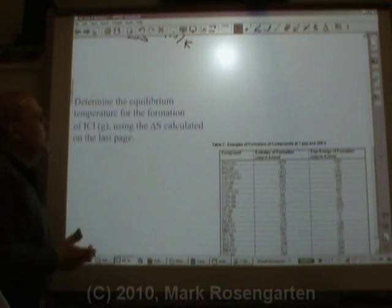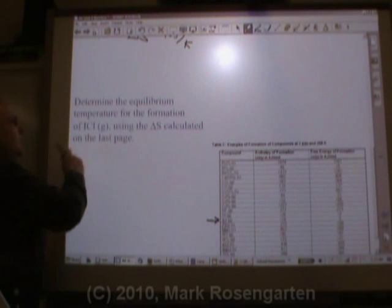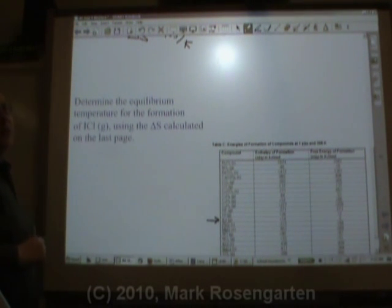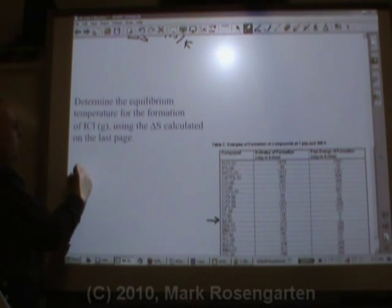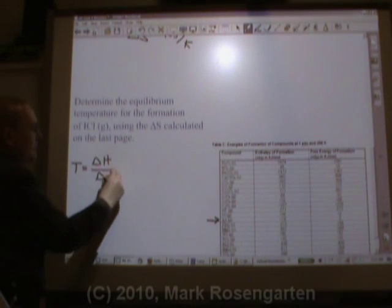Determine the equilibrium temperature for the formation of iodine chloride. That's the one we just found the delta S for, using the delta S we calculated on the last page. So the equilibrium temperature equals the delta H divided by the delta S.